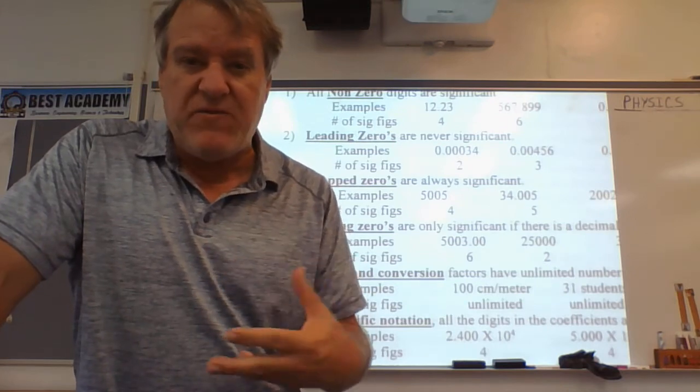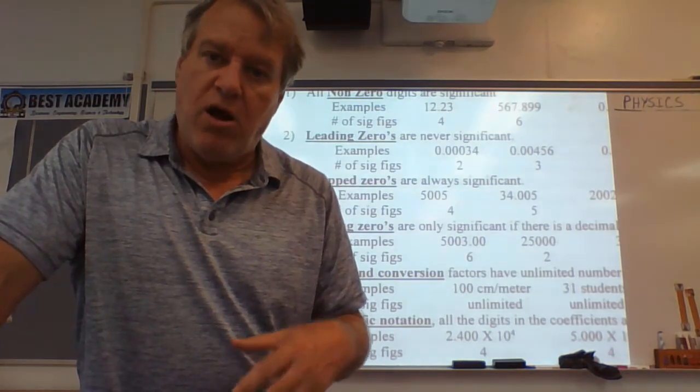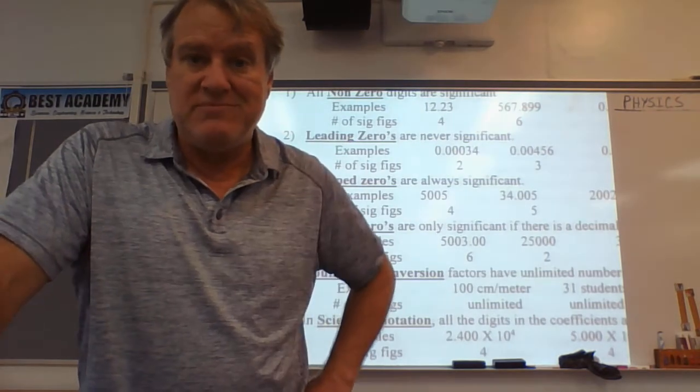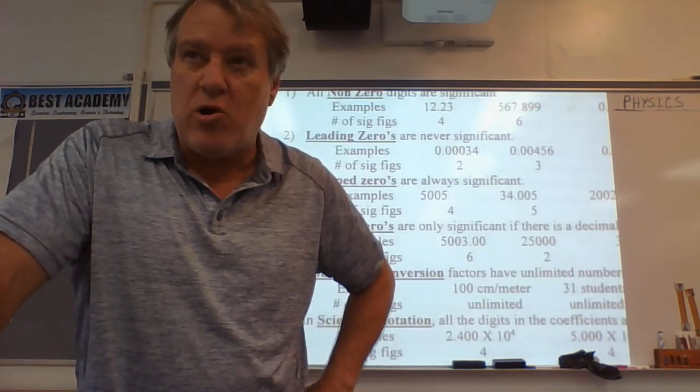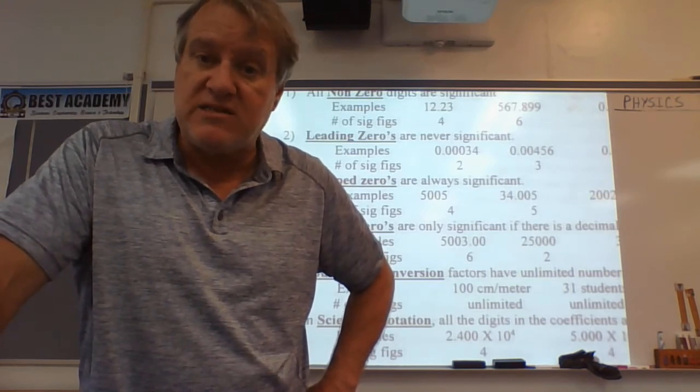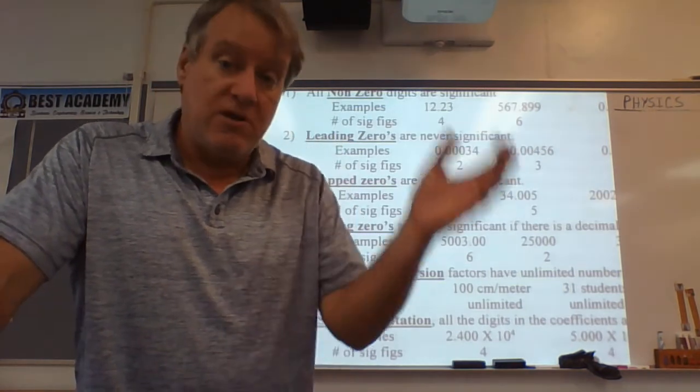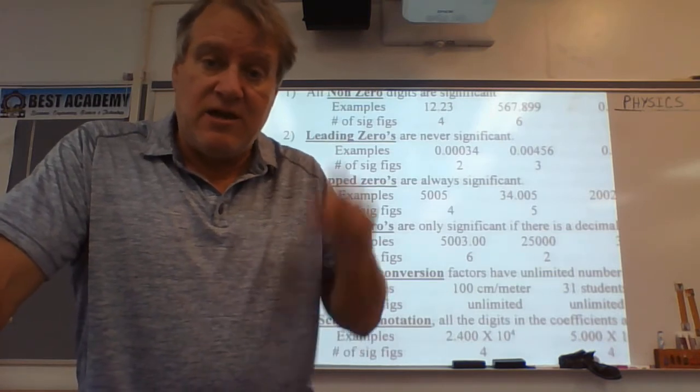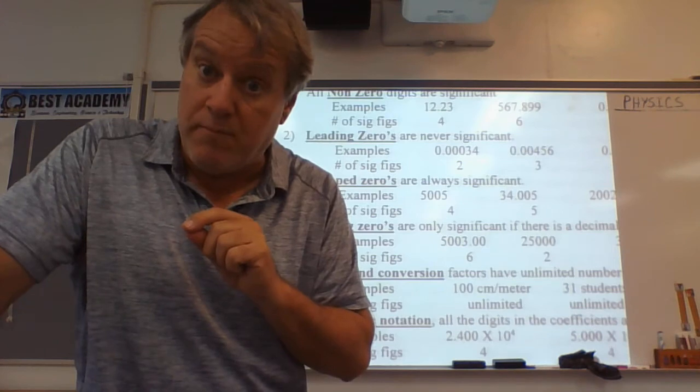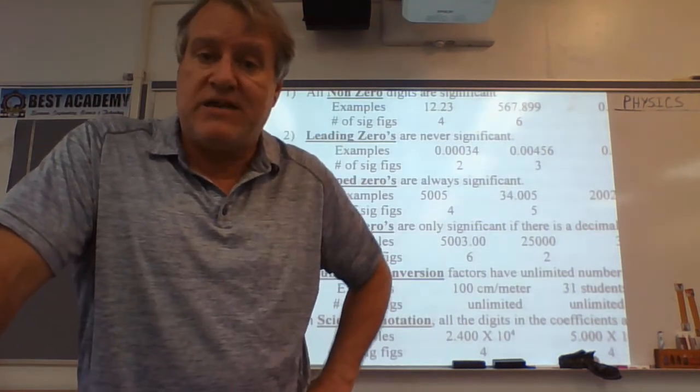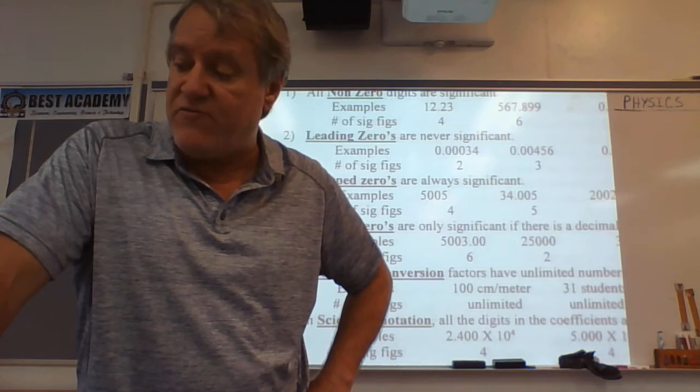Now once you know how many sig figs are in each measurement, all you do is you round your answer to the least number of those. So if you have a number like 35 times something, and the 35 is your smallest number of sig figs, two, then you're going to round your answer to two sig figs. Whatever that answer is, count over two places, numbers now, not zeros, and then round it to that second place. Because that's the rules. Weakest number of sig figs rules.